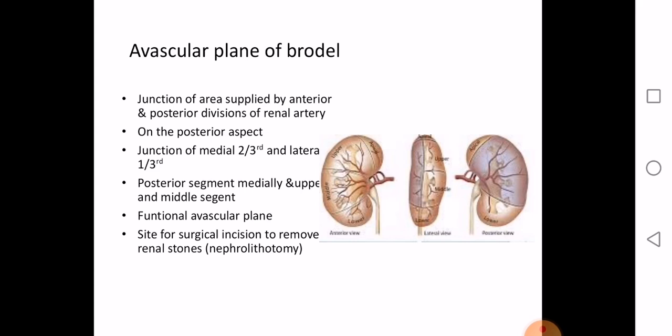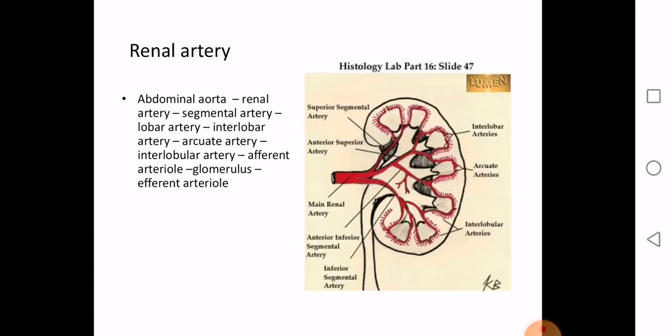From the abdominal aorta, the renal artery divides into segmental arteries, then lobar arteries to each lobe, then interlobar arteries. The interlobar arteries pass through the cortical columns. Once they reach the corticomedullary junction, each divides into two arcuate arteries, which arch over the base of adjacent pyramids.